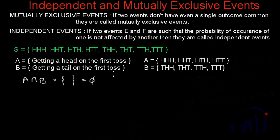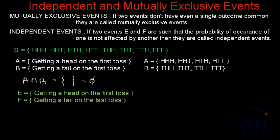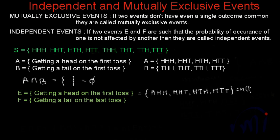Events A and B are mutually exclusive because there is not even a single outcome common to both events. Now let's talk about independent events. We are going to define two events E and F. Event E is defined as getting a head on the first toss. Event F is defined as getting a tail on the last toss. Event E will have the same four favorable outcomes as set A, so the cardinal number of E is equal to 4.